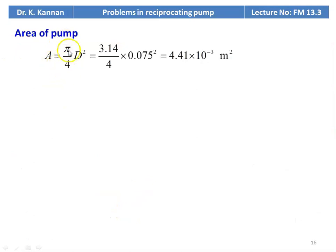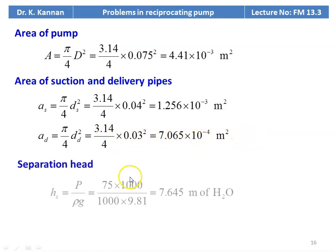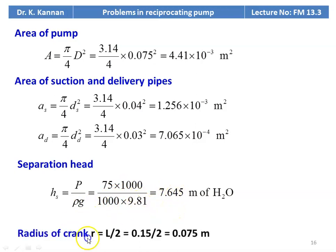Given: diameter = 0.075 m, stroke length = 0.15 m, suction head = 3 m, suction pipe diameter = 0.04 m, suction pipe length = 5 m, delivery head HD = 12 m, delivery pipe diameter = 0.03 m, delivery pipe length LD = 15 m, separation at 75 kN/m². Area of pump A = π/4 × 0.075² = 4.41×10⁻³ m². Area of suction pipe AS = π/4 × 0.04² = 1.256×10⁻³ m². Area of delivery pipe AD = π/4 × 0.03² = 7.065×10⁻⁴ m². Separation head = 75×1000/(1000×9.81) = 7.645 m. Radius of crank R = 0.15/2 = 0.075 m.